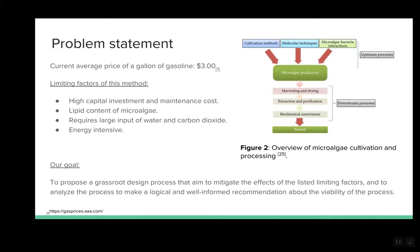Although this novel approach sounds very promising, we've found several factors that prevent industry-scale biodiesel production from microalgae. Some of those deterring factors include high capital investment, high maintenance and operational costs, large input requirements of water and carbon dioxide, and dependence on the lipid content and productivity of the chosen microalgae strain. Our group seeks to propose a grassroots design process that could mitigate the effects of these limiting factors and to analyze this process to make a well-informed recommendation.